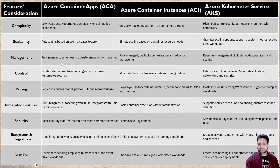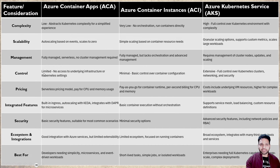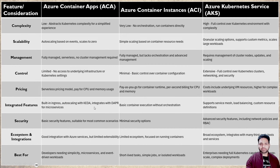For control, AKS has extensive control, ACI has minimal control, and Azure Container Apps has a limited level of control. Integrated features include KEDA (Kubernetes event-driven auto-scaling) and distributed application runtime for microservices in ACA. ACI supports only basic container execution, while AKS supports service mesh, custom resource definitions, and load balancing.